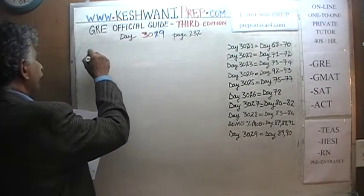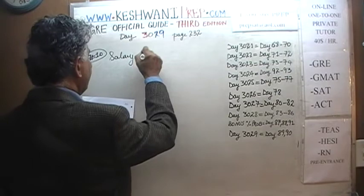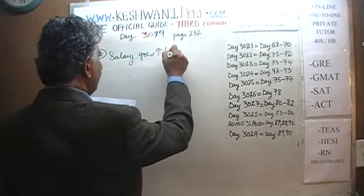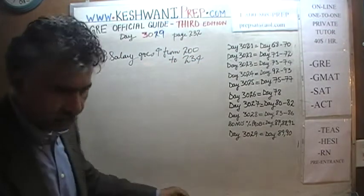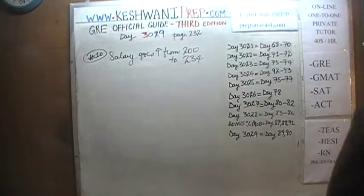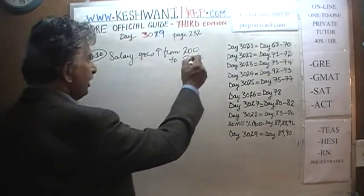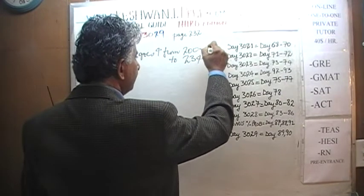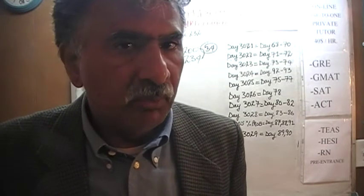Number 10: the salary goes up from 200 to 234. The question is what is the percentage change. The change is 34. There are two ways to solve this problem — the traditional classical way, where you set up an equation, or the quick and dirty way, which requires some intuitive understanding as opposed to doing it mechanically.